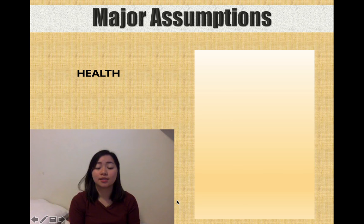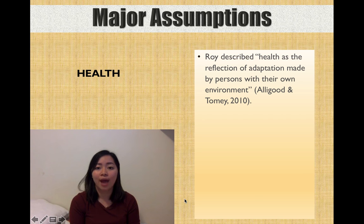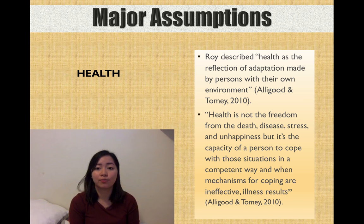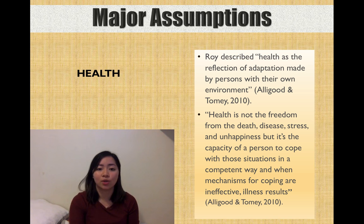Second is health. Roy described health as a reflection of adaptation made by the person with their own environment. She explained that health is not the freedom from death, disease, stress, and unhappiness, but it is the capacity of a person to cope with those situations in a competent way. And when these mechanisms for coping are ineffective, illness results.